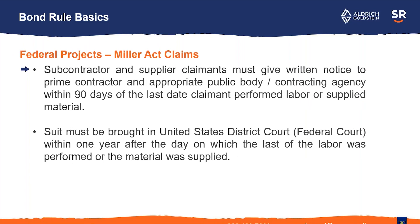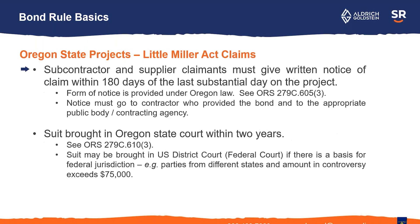As far as timing goes for bond rules, you need to file your claim within 90 days of the last day that you perform work. You'll have to bring a lawsuit within one year in US district court — that's in federal court. As far as an Oregon state project or bond claims, you have to give your written notice within 180 days, and then you need to bring your suit in Oregon state court within two years. It's possible you could end up in federal court, but generally you're going to file in Oregon state court.